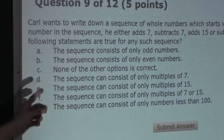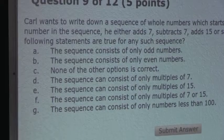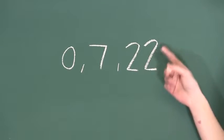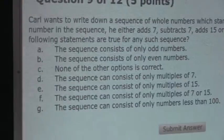Now option D. The sequence can consist of only multiples of 7. Well, we can use the same exact counterexample sequence and see that 22 is not a multiple of 7. So therefore that option is wrong.